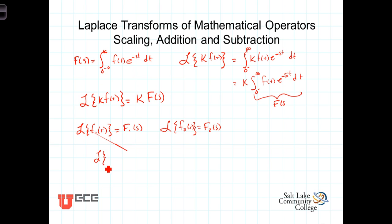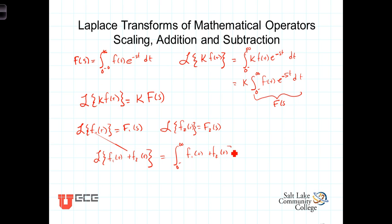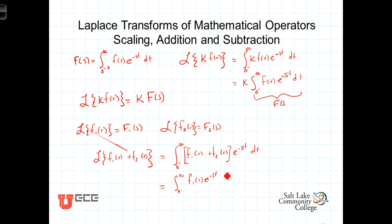The Laplace transform of f1 of t plus f2 of t, falling back to the definition, is equal to the integral from 0 minus to infinity of f1 of t plus f2 of t, e to the minus st dt. As you can see, it's already falling apart by the property of superposition. This is equal to the integral from 0 minus to infinity of f1 of t, e to the minus st dt,